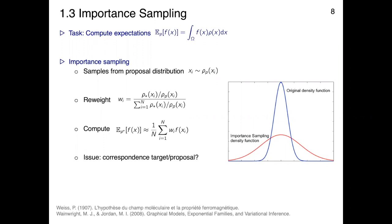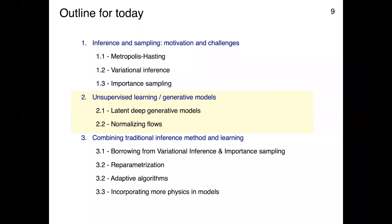Importance sampling works out of the box in low dimensions using a flat proposal, but in high dimensions it only works if it's adaptive — meaning the proposal is updated based on observed samples. We'll return to adaptive methods later.